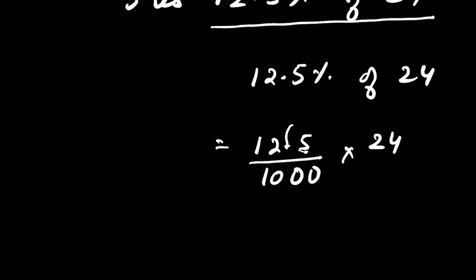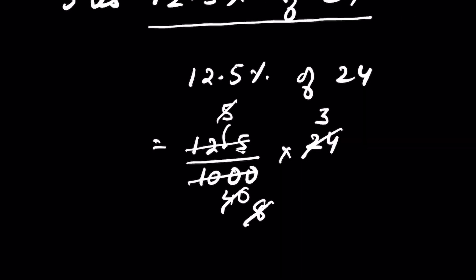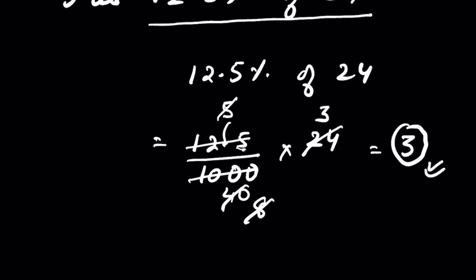Now this is 25 times 5 is 125, and 25 times 4 is 100. Now 5 times 8 is 40, and 8 times 3 is 24. So 12.5 percent of 24 is 3. So your answer is correct.